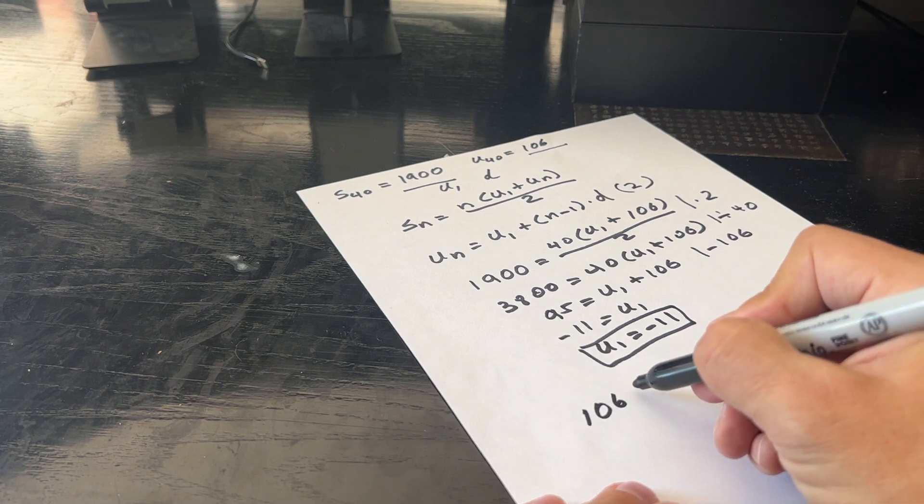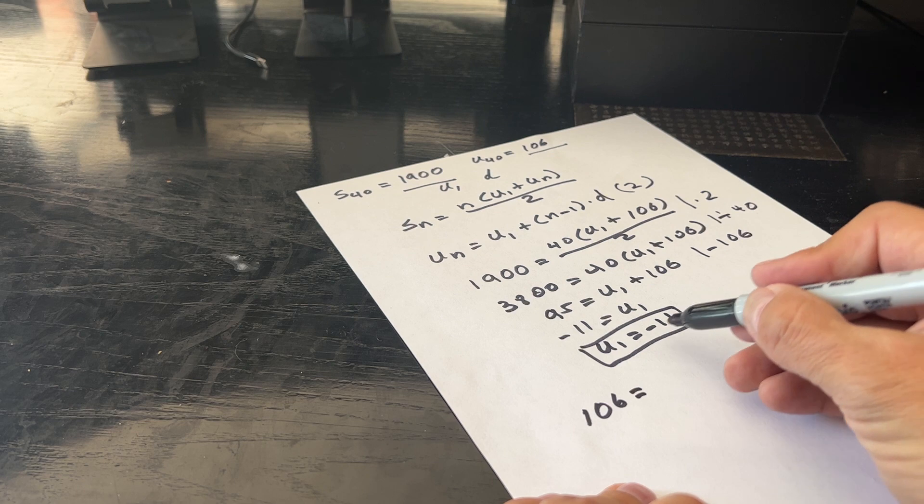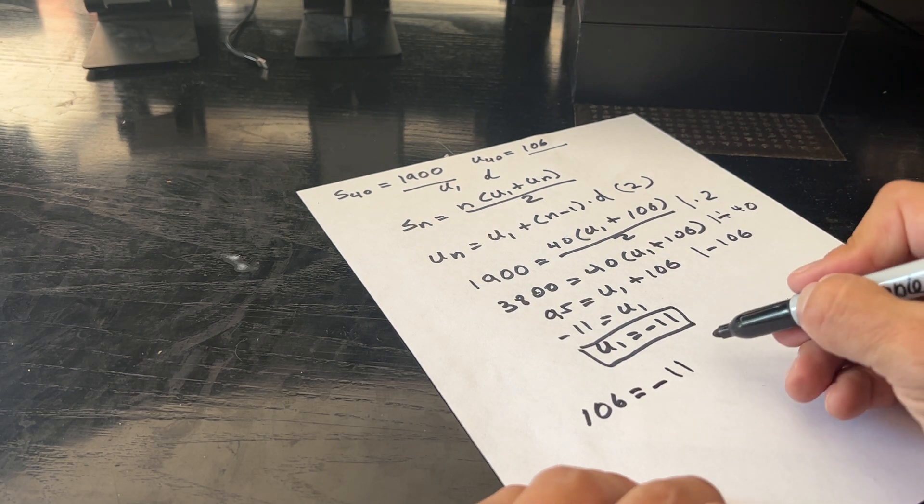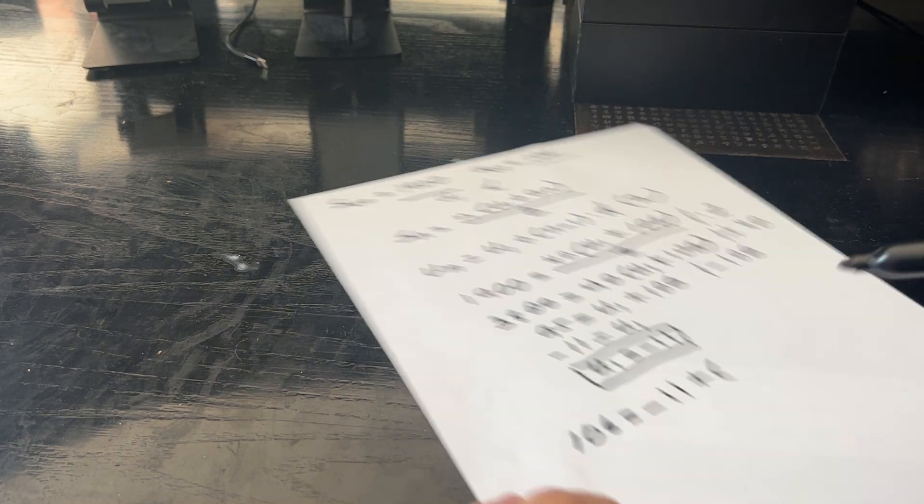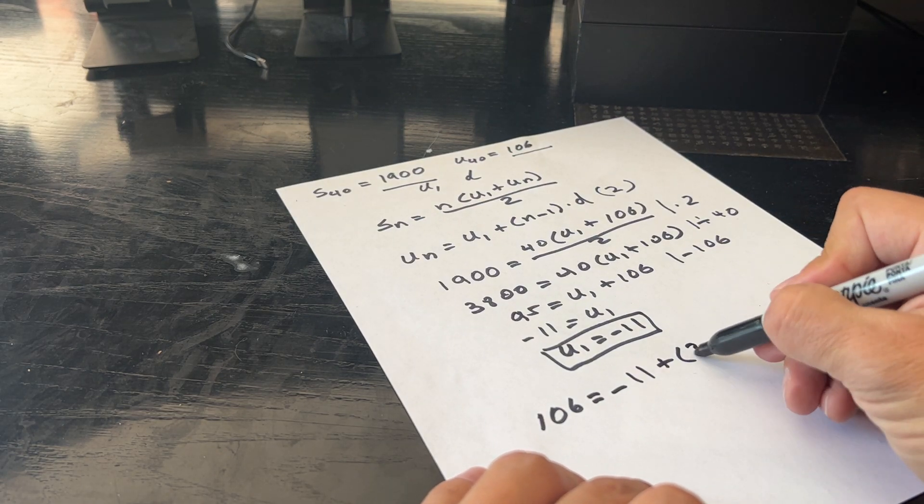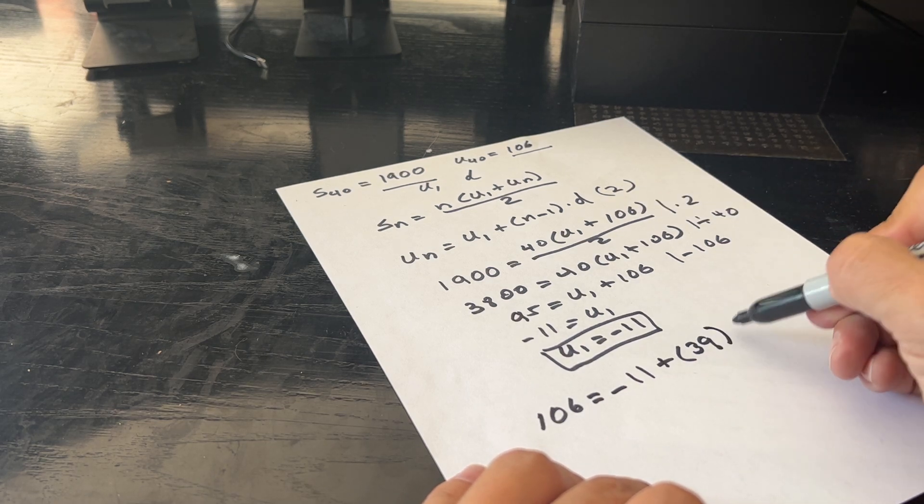equals U1, which is now minus 11, we know that, we just calculated it, plus N minus 1. But N is 40. So 40 minus 1 is 39, and this multiplies times D.